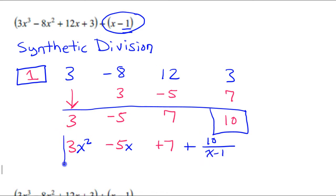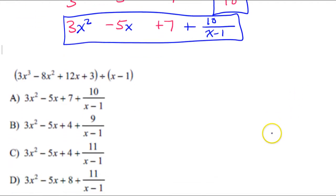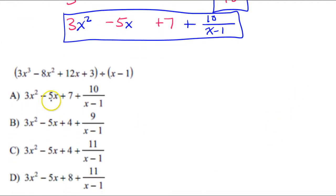So this would be my final answer. And now let's compare that and see which choice that was. Let's see. 3x squared minus 5x plus 7, and then 10 over x minus 1. Well, there we go. A is the answer.